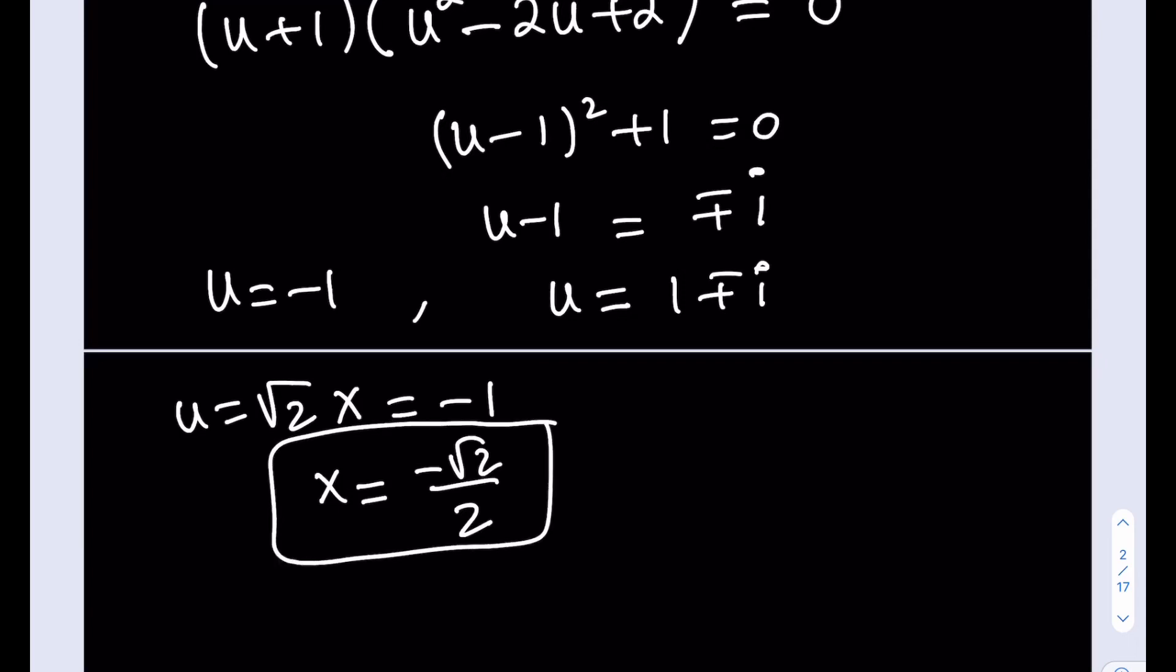And the complex solutions are going to be coming from this one. So if I go ahead and write it as 1 plus minus i, so now isolate the x by dividing both sides by root 2, and you're going to be getting this equation.